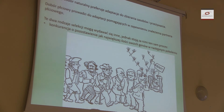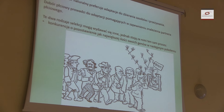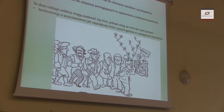Podsumowując: klasyczny dobór naturalny preferuje adaptację zbierania zasobów i przeżywania. Dobór płciowy prowadzi do adaptacji pomagających w zapewnieniu znalezienia partnera płciowego. Trzeba uświadomić sobie, że te procesy są te same, jeżeli chodzi o cel – zostawienie w przyszłym pokoleniu jak największej ilości kopii swoich genów.